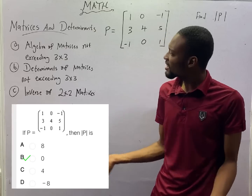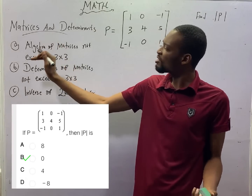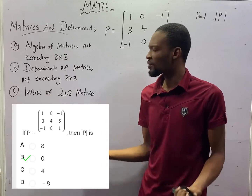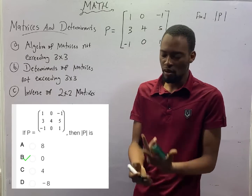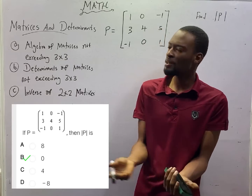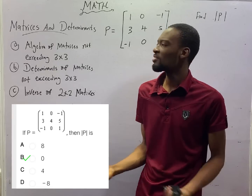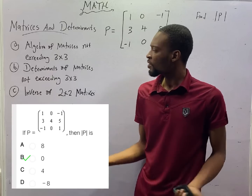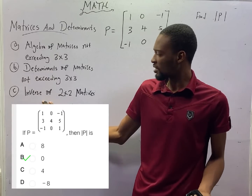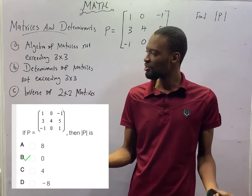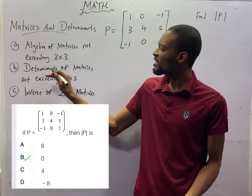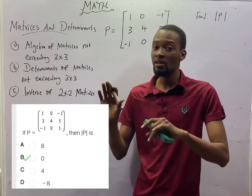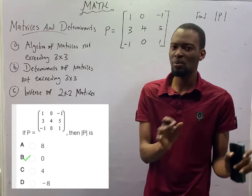We've already learned the algebra of matrices not exceeding 3×3 — addition, subtraction, and multiplication of 2×2 and 3×3 matrices. We've learned even other dimensions of matrices. We've been able to look at the inverse of 2×2 matrices. Now let's see the determinants of 3×3 matrices, since we've already looked at 2×2 matrices.